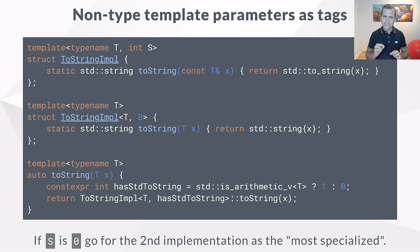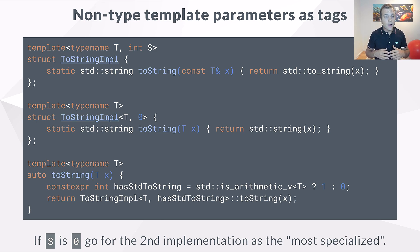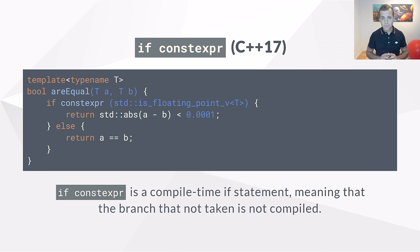Yet another way to do tag dispatching is by using non-type template parameters as tags. This is a bit less readable, but slightly better than SFINAE. We're partially specializing the two_string_input template class based on the value of the non-type template parameter. The compiler will select the most specialized implementation. When we call two_string with type T not being a number, two_string_input is instantiated with zero as the second template parameter, and the specialization is selected. If T is a number, the base case is selected. As of C++17, we have if constexpr, which is a compile-time if statement — only the code inside the branch being followed gets compiled. If you can get away with using if constexpr instead of SFINAE, you should certainly do it.